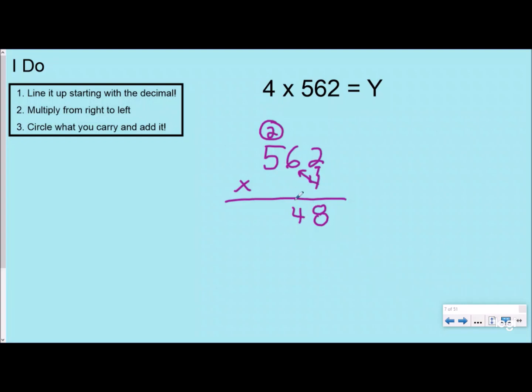And now when I multiply the next place value, four times five, which is really four times 500, but four times five is 20. I add my two groups to make it 22, and my answer would be 2,248. Or in math terms, you would say the product is 2,248.